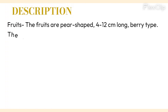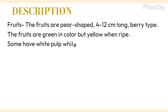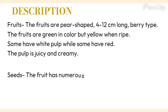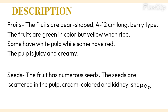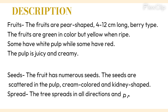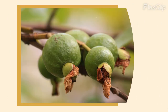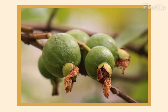Fruits: the fruits are pear-shaped, 4–12 cm long, berry type. The fruits are green in color but yellow when ripe. Some have white pulp while some have red. The pulp is juicy and creamy. Seeds: the fruit has numerous seeds. The seeds are scattered in the pulp, cream-colored and kidney-shaped.